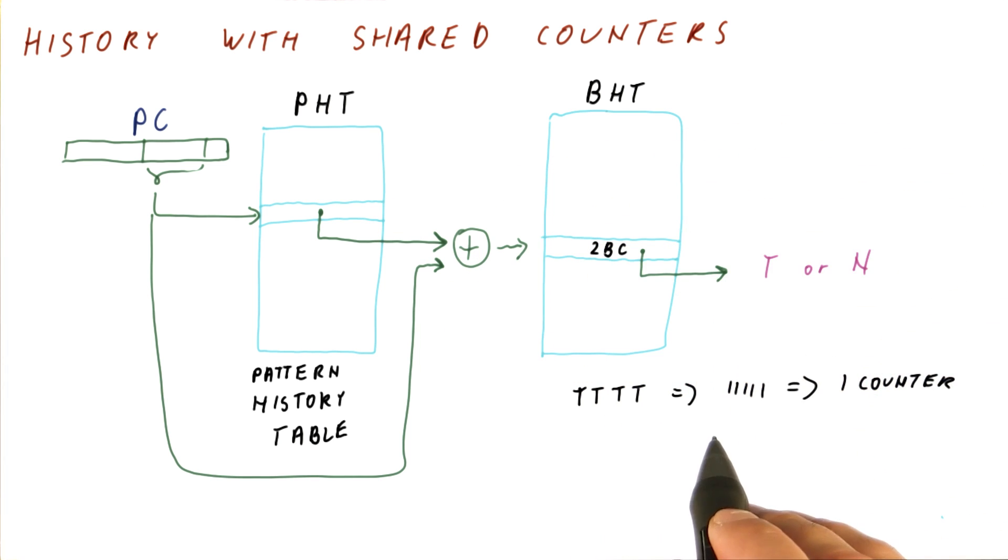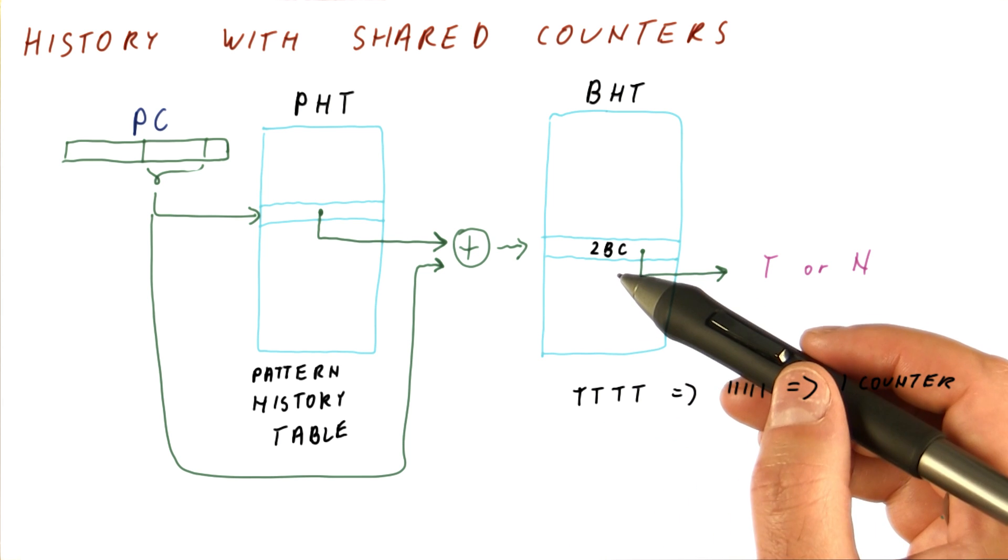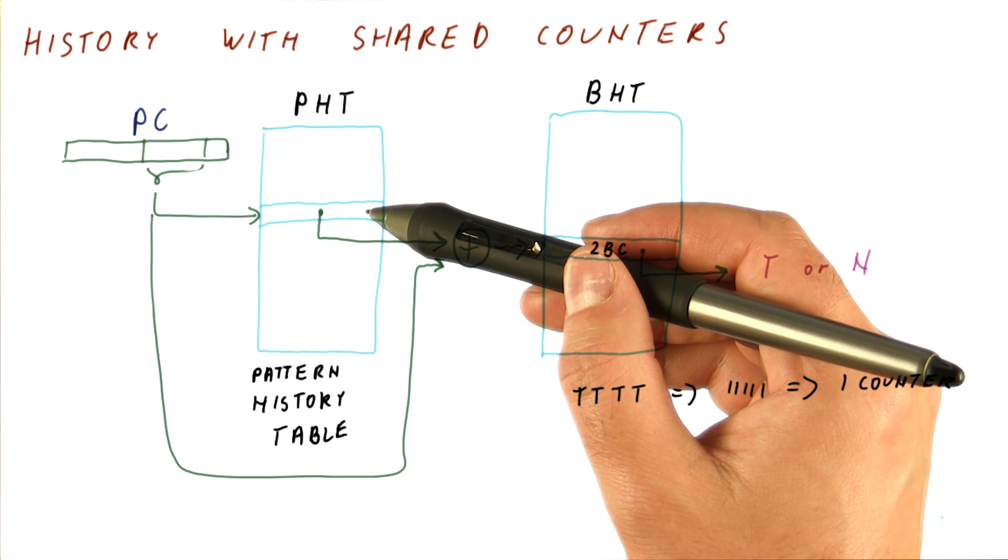So although we have a long history, if the branch is just a repetition of the same thing, we end up using only one of the two-bit counters. The additional cost relative to just having an array of two-bit counters is that now we're keeping an 11-bit history for this branch.